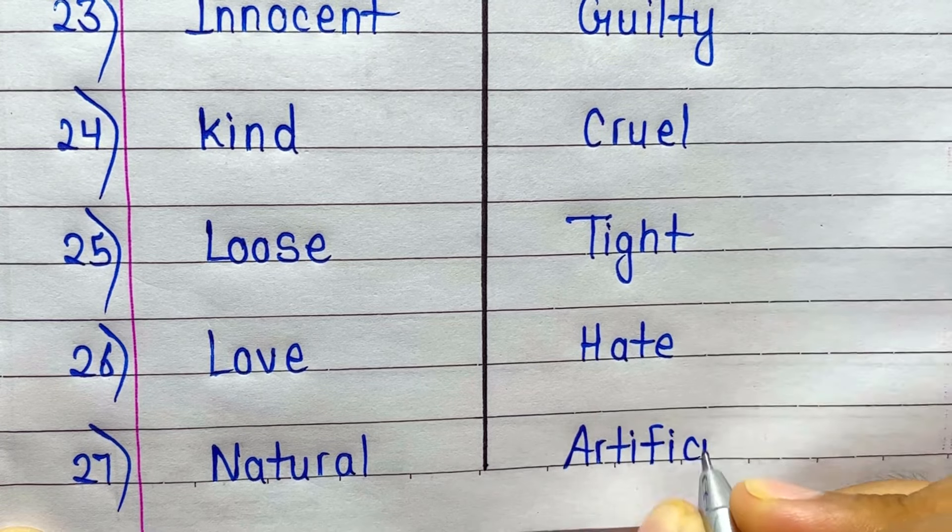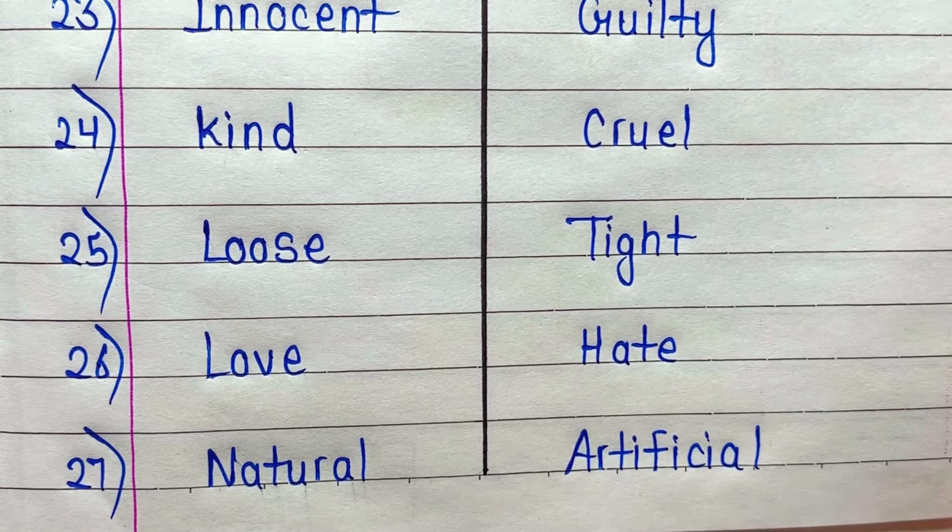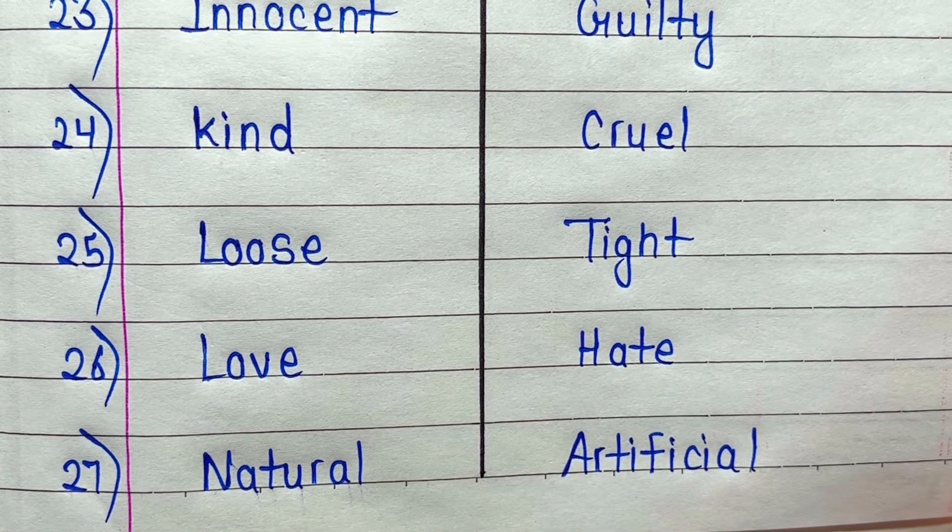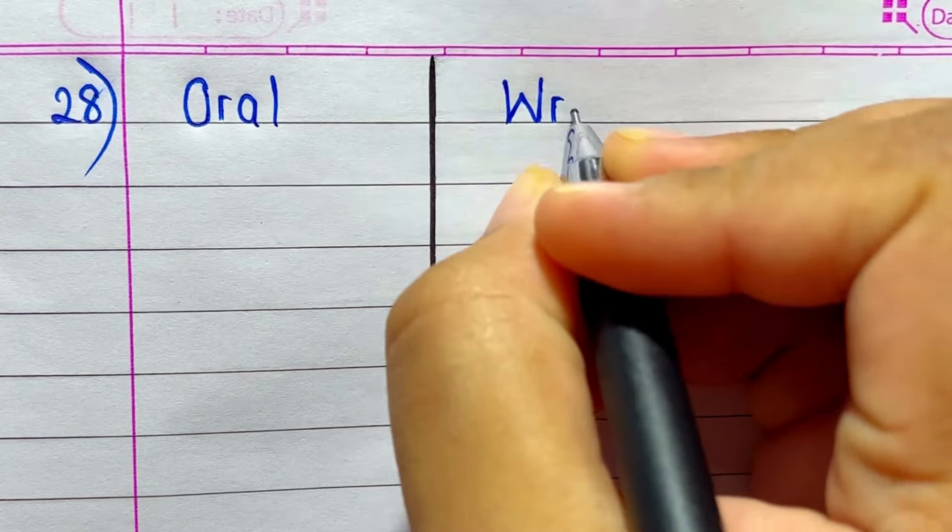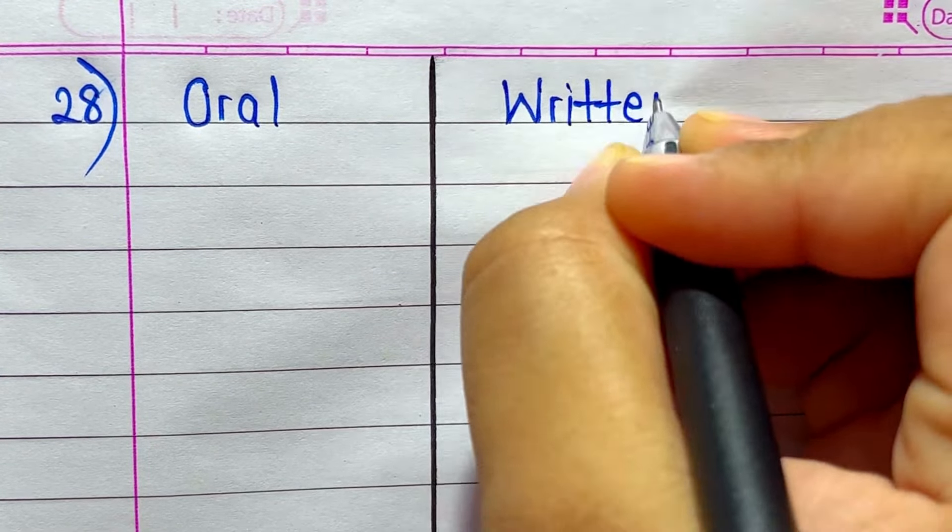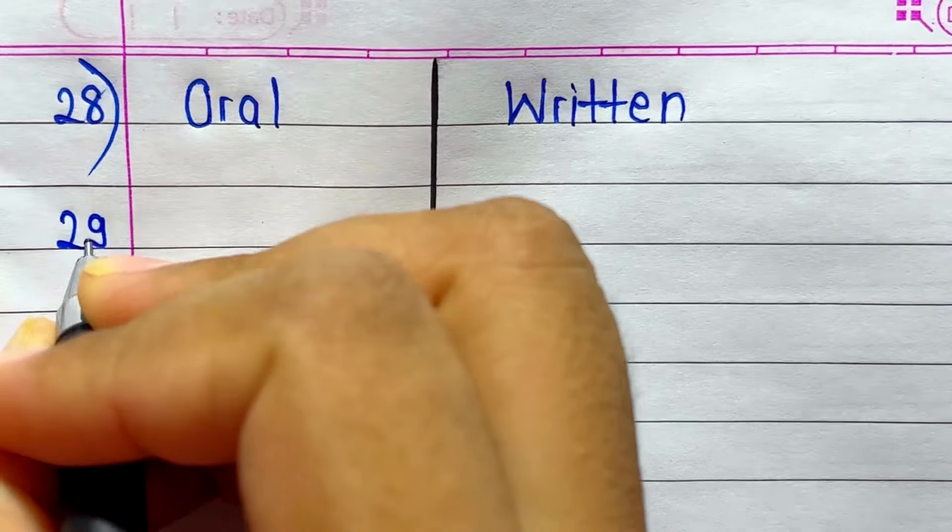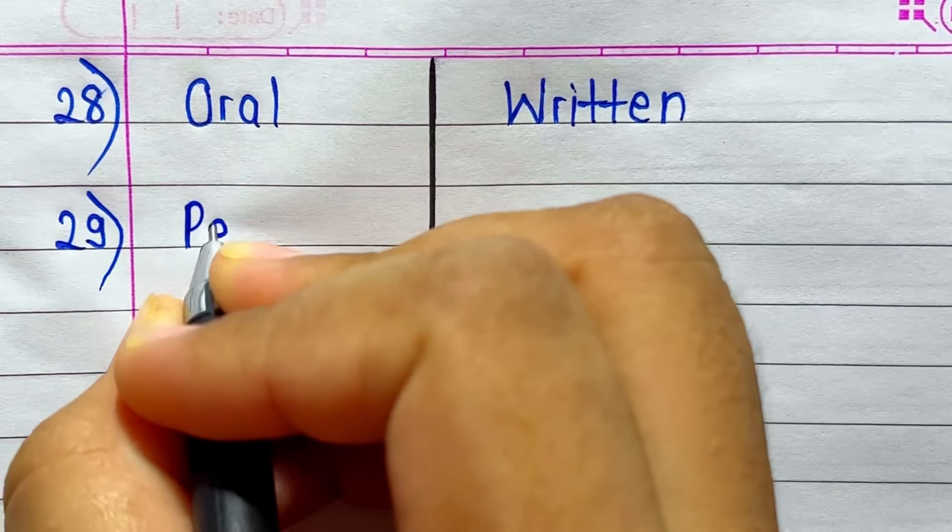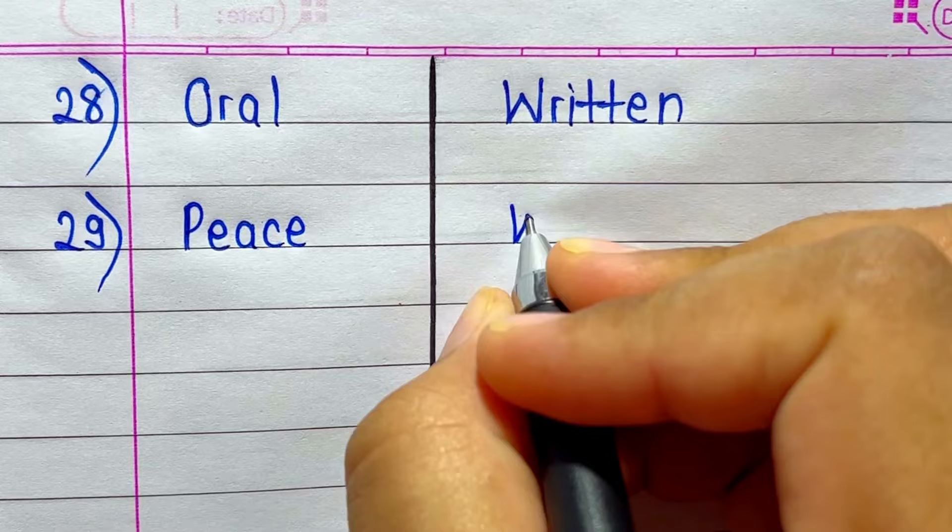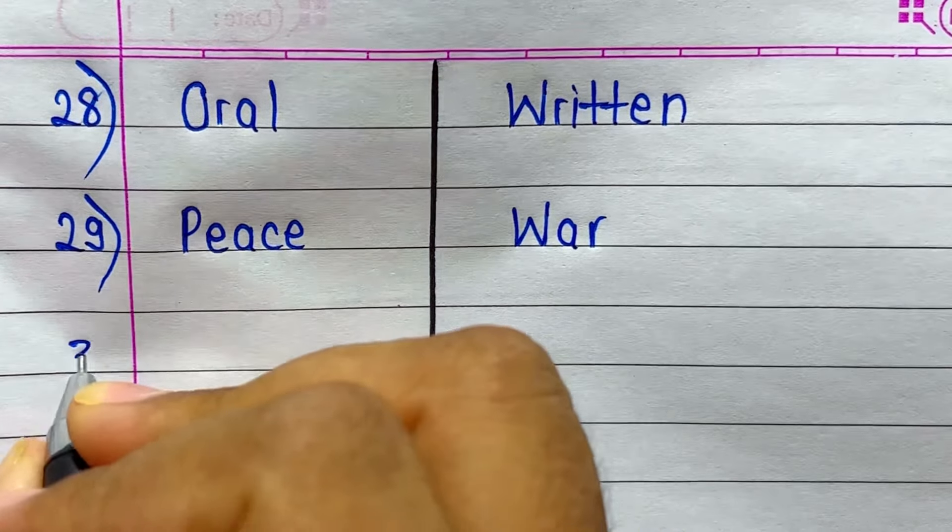Antonym of Natural is Artificial. Next is Oral. Antonym of Oral is Written. Antonym of Peace is War.